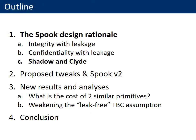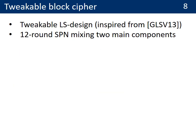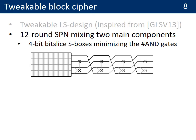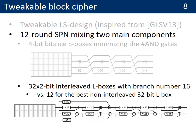We conclude this discussion of the Spook design rationale by describing its tweakable block cipher and permutation. For the tweakable block cipher, we use the LS design approach in order to generate an efficient bit-sliced cipher. It iterates 12 rounds made of two main components: first, a 4-bit bit-sliced S-box similar to what is found in many lightweight ciphers; and next, a 32-bit interleaved L-box performing computations on 32-bit words. As a result, it is efficiently implemented in software. The interleaving also allows us to reach a branch number of 16, while the best non-interleaved L-box would have a branch number of 12.